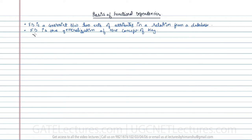We generally represent functional dependencies as X determines Y. This says that if two tuples agree on the value of attribute X, then they must also agree on the attribute Y. We read this as 'X determines Y,' or, with the help of a unique value of X, you can determine every unique value of Y.